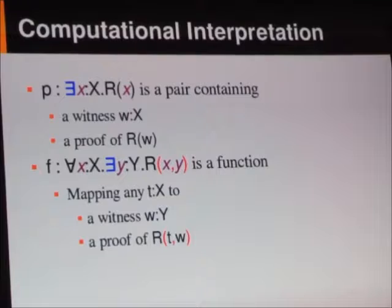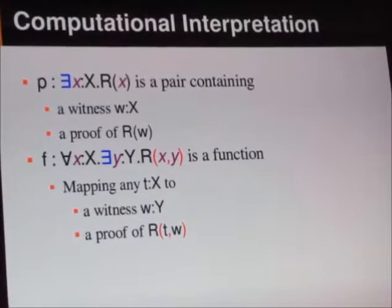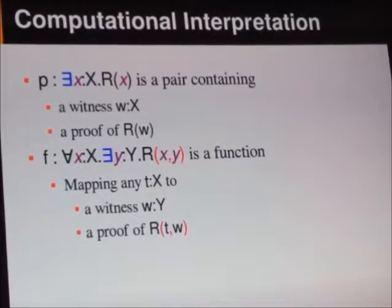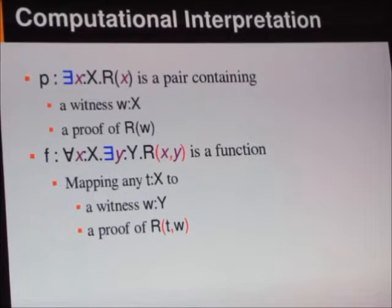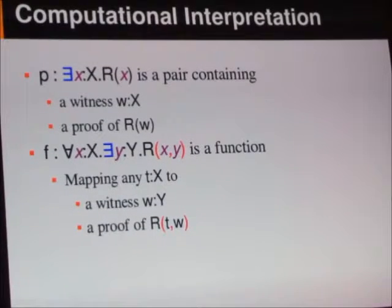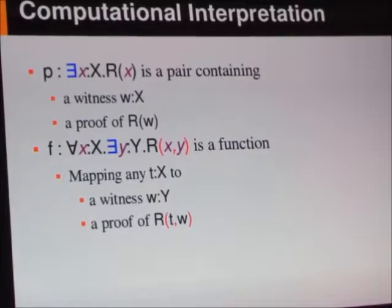that means it's a pair that contains a witness X, so something of type X, and a proof that that something satisfies this predicate of R.